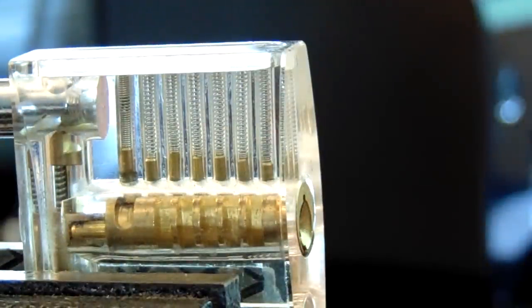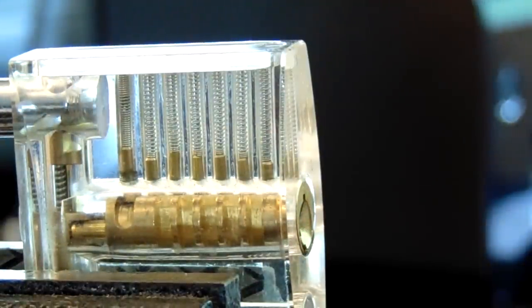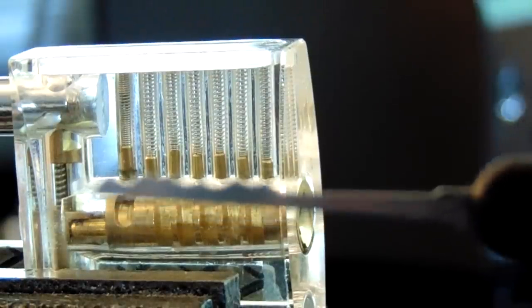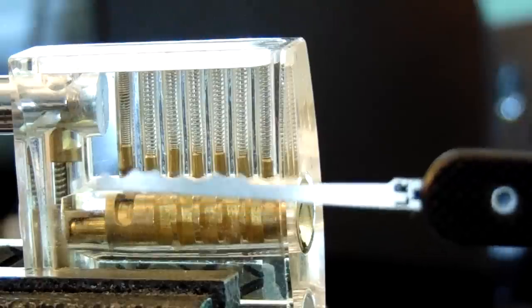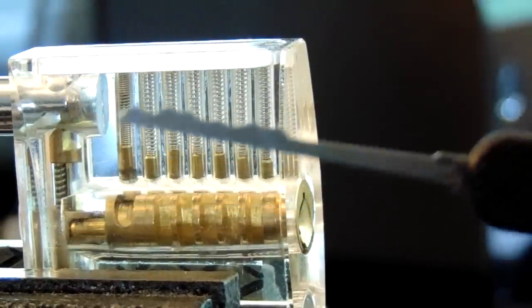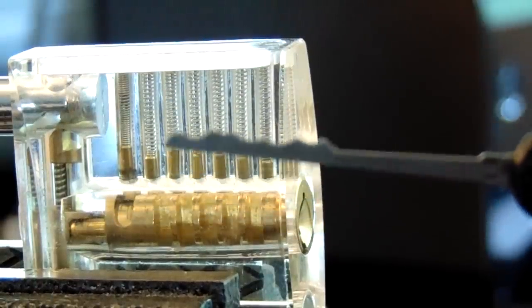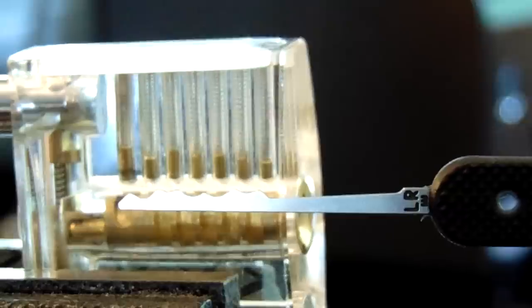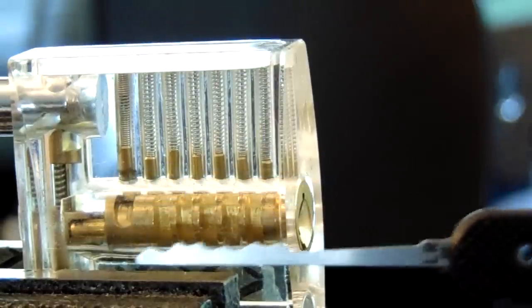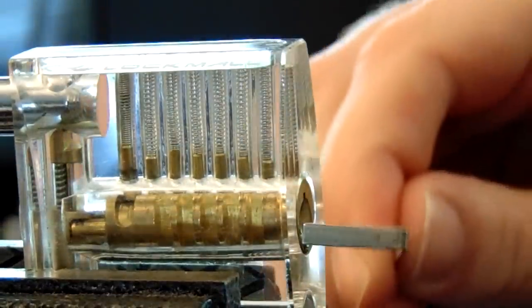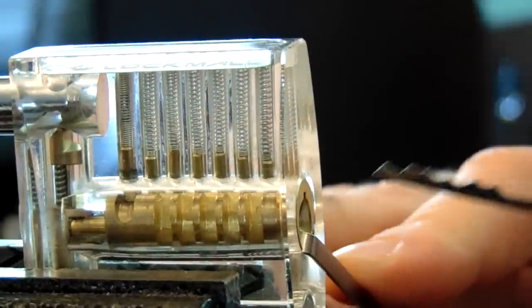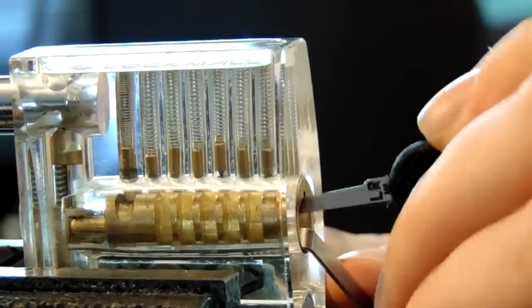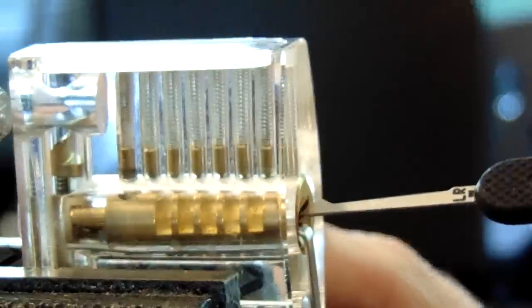Another popular technique is called rocking, where you'll use your city rake or your L rake. And you'll rock up and down until all the key pins are lifted up to shear, setting them randomly. And then it will open. You're going to put city rake in, just going to go up and down until we're open.